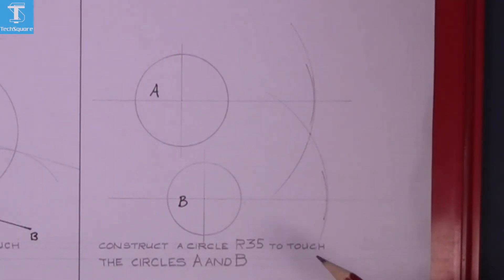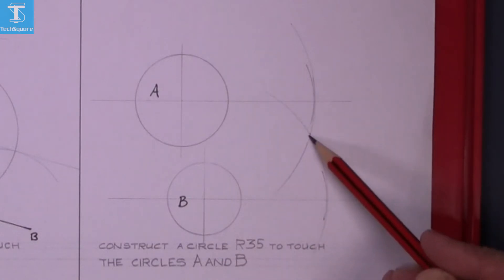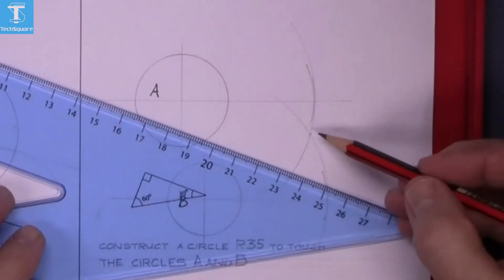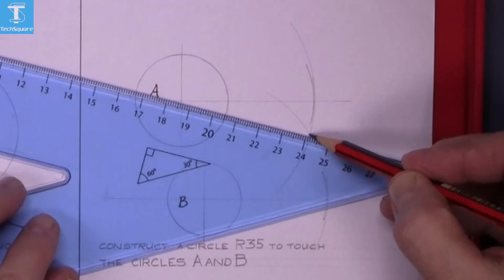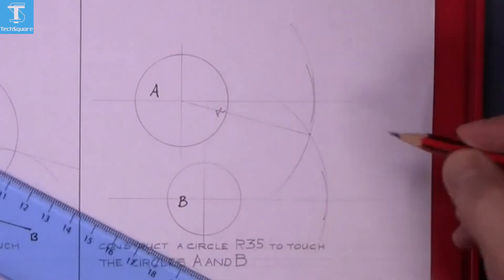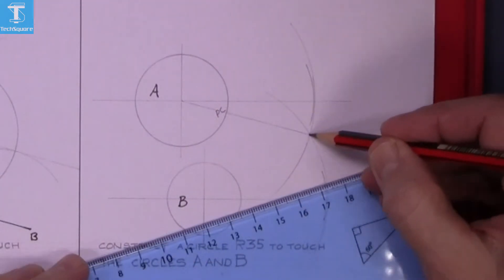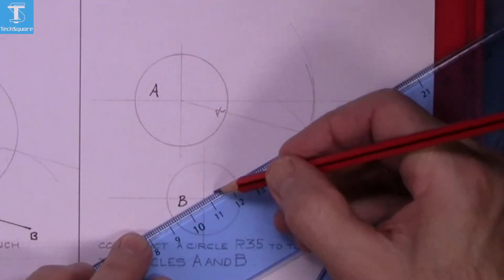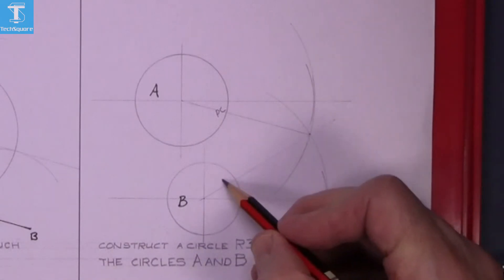To get the point of contact, we join the new center to the center of circle A. That's your point of contact. And the same again, your new center to the center of circle B gets you the point of contact here.